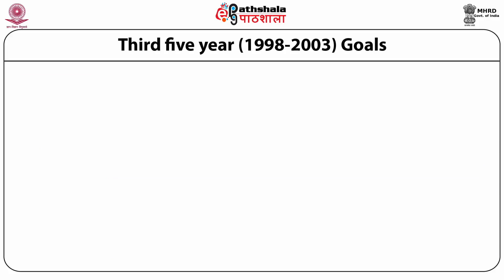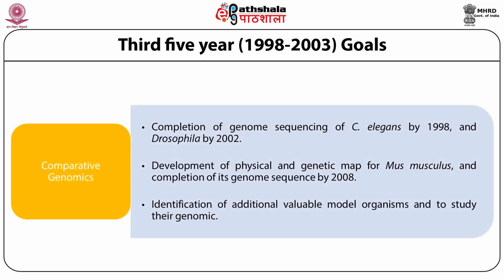The last goal was comparative genomics, which involved completion of genome sequencing of C. elegans by 1998 and Drosophila by 2002, development of physical and genetic maps for Mus musculus and completion of its genome sequence by 2008, and identification of additional valuable model organisms to study their genomes.